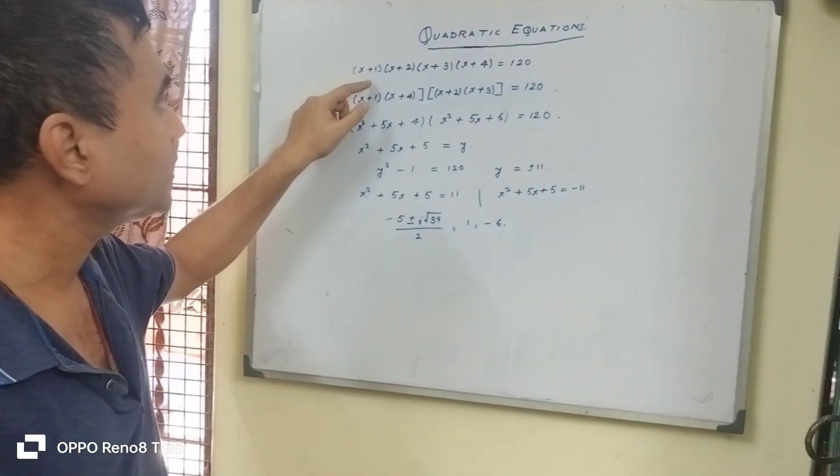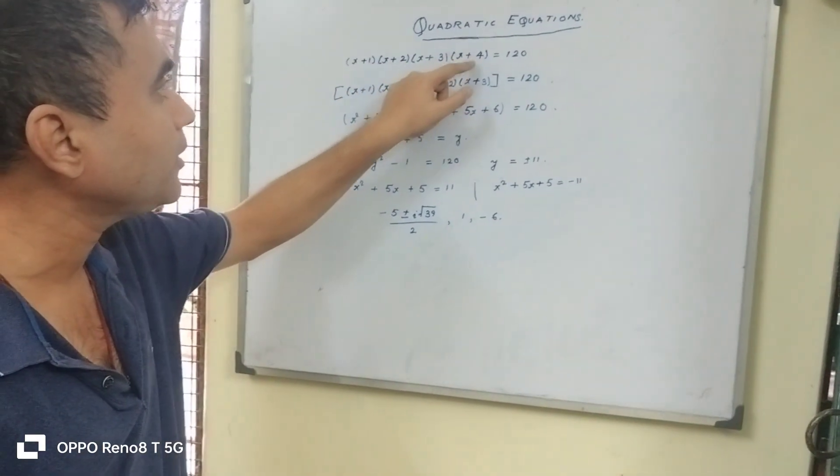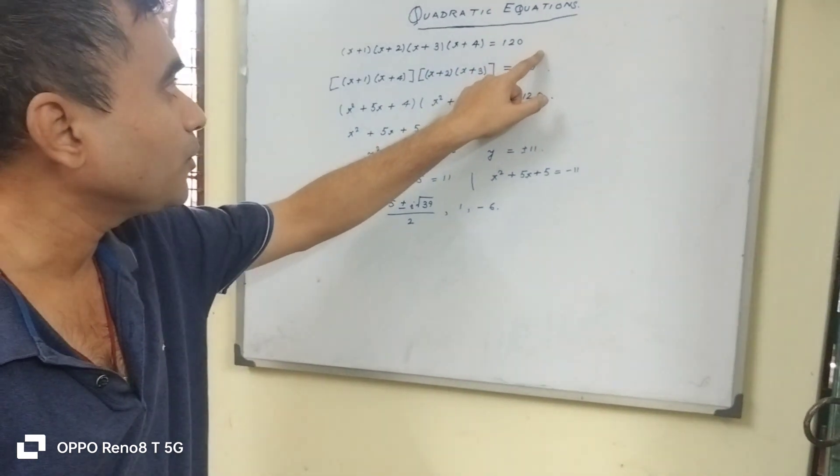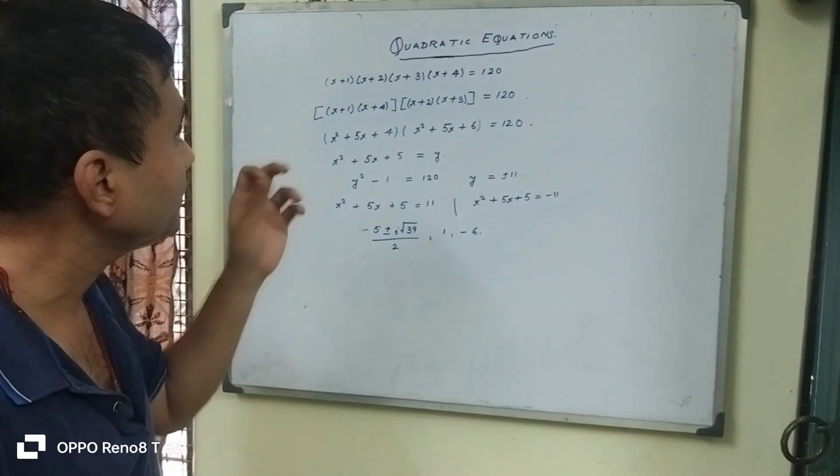There are consecutive terms: x plus 1, x plus 2, x plus 3, x plus 4, equals 120. How to do it?